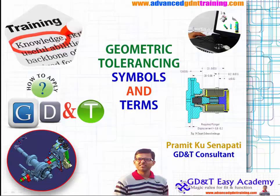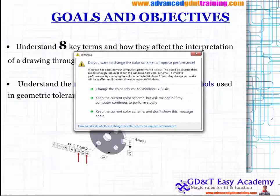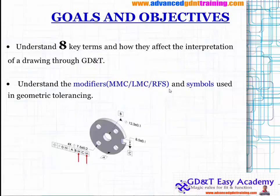Let me start with the goals and objectives. We'll understand eight key terms and how they affect the interpretation of a drawing through GD&T. We'll also be discussing modifiers like MMC, LMC, and RFS, and many others, as well as symbols that we are going to use inside geometric tolerance.